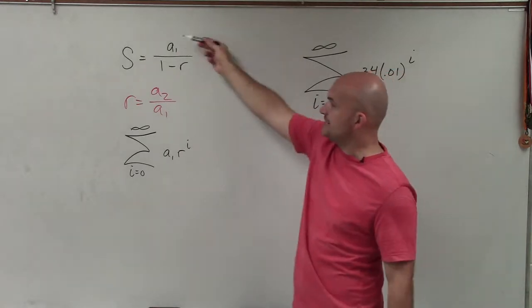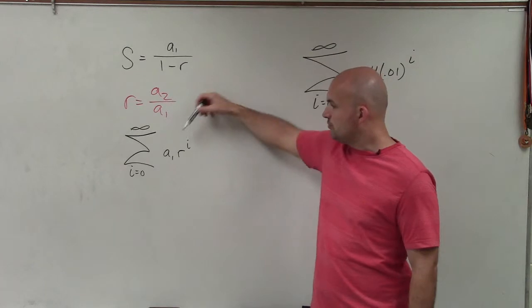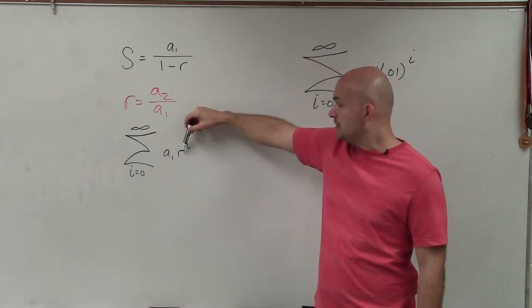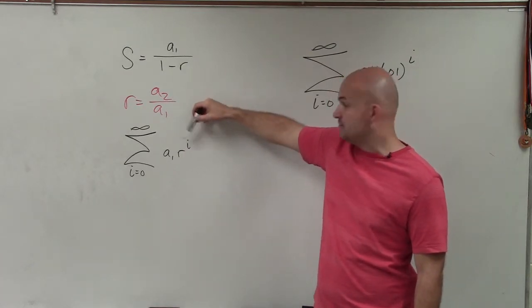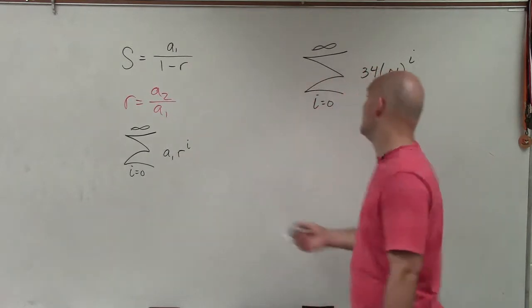So to do that, we need to know what a sub 1 and what r is. Here's the general summation notation, where we have r, our ratio, being raised to i, which is our first term, which starts with 0 in this case. And then a sub 1 is multiplied in front of that.